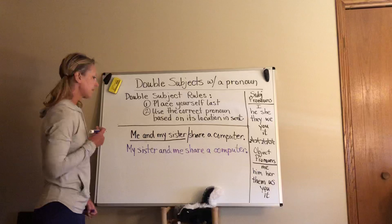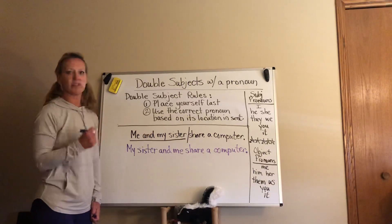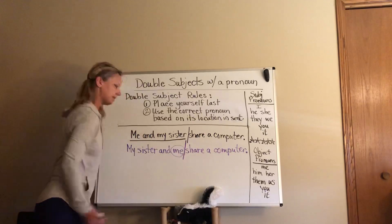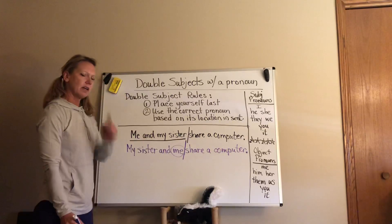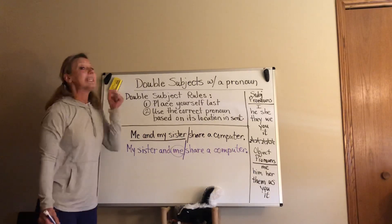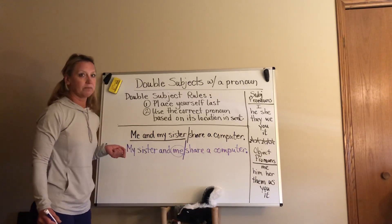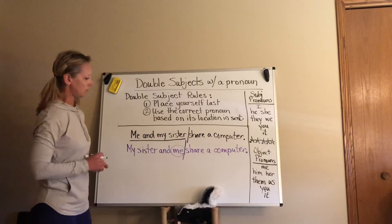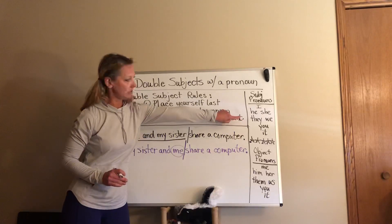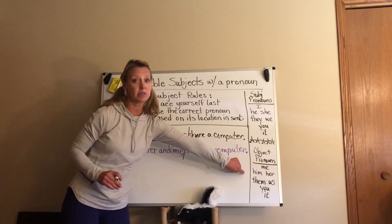Now go to rule number two: use the correct pronoun based on its location in the sentence. My pronoun here is the word 'me.' Remember that slash mark separating the subject from the predicate? So I have to look at the word 'me' and determine — did I choose the correct pronoun? Since this is the subject of the sentence, I need to use one of the subject pronouns.